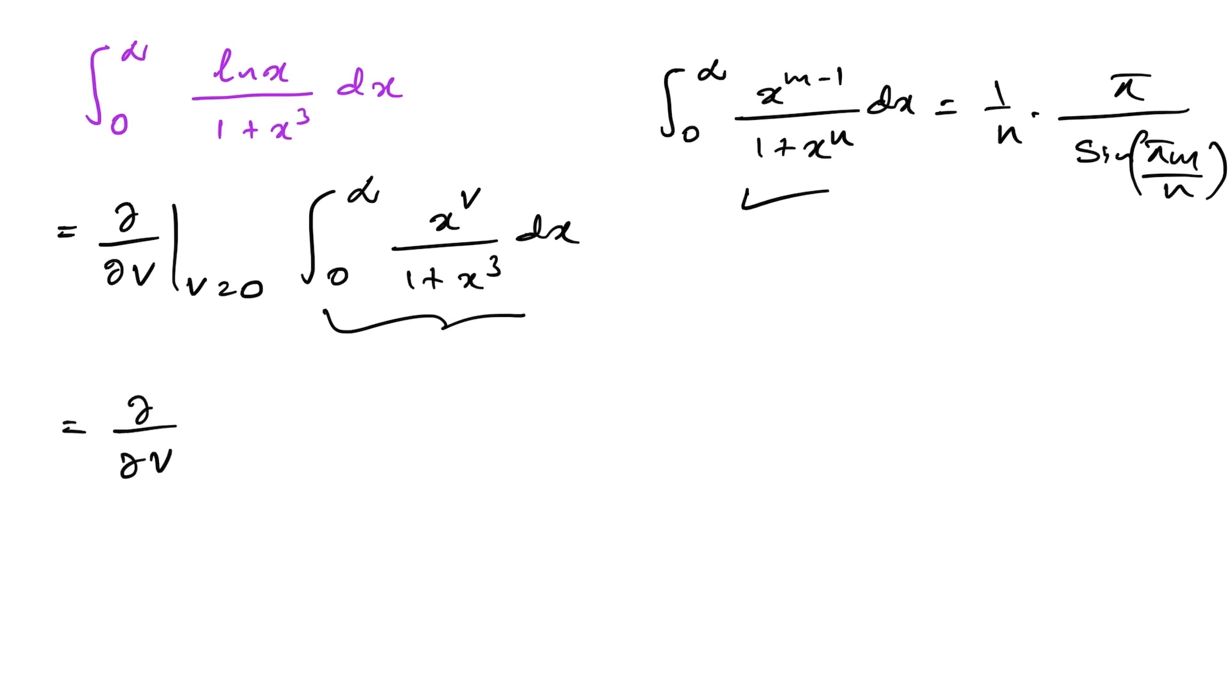Now we have 1 over n, we know n is 3, so 1 over 3 pi over sine of pi times v plus 1 over 3. Then here pi over 3, we can write here pi over 3, then derivative of 1 over sine means cosecant, so we know the derivative.